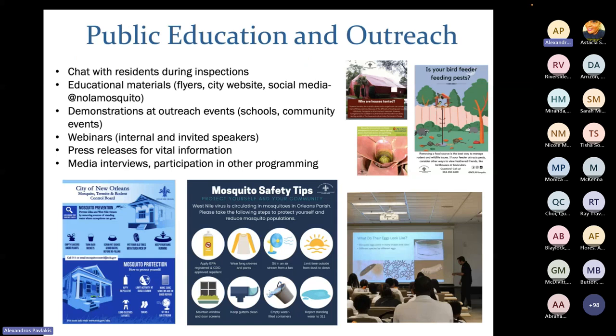Finally, public education is crucial. We do a great job getting information out about mosquitoes, but the major point is that we can't do this alone. There's no way we can eliminate all mosquito breeding habitats as an agency alone. So we look to get input and help from our citizens to make sure we can target our mosquito species of concern. We create informational materials, chat with residents, conduct this webinar series, and do demonstrations and events to make sure this information reaches homeowners.